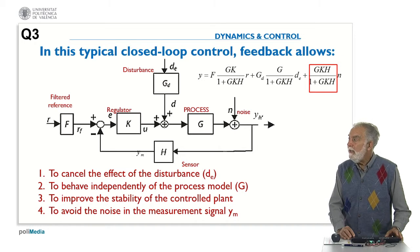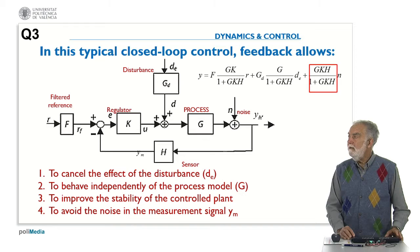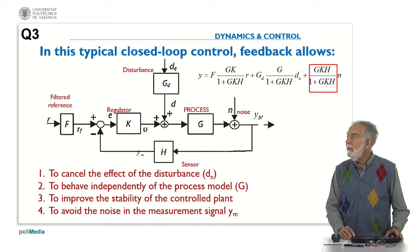To avoid the noise in the measurement signal. Well here you can see that the output is related to the noise by this relationship, this transfer function. And of course this is not zero. It could be even one or could be any value between zero and one. So in general this feedback doesn't allow to avoid the noise in the measurement signal.